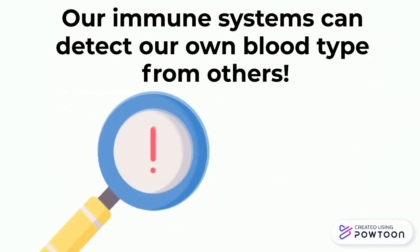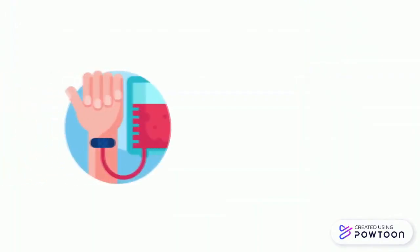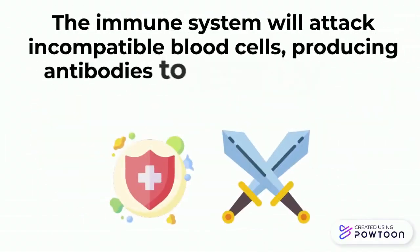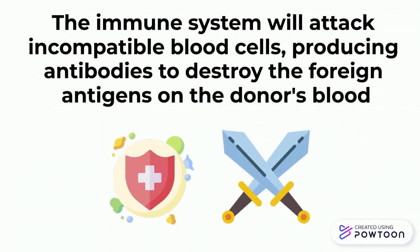Similar to detecting viruses and bacteria, our immune systems can tell apart our own blood cells from one another. If the blood a patient receives is not compatible with their own blood type antigen, then serious consequences can occur, including death. The immune system will attack the incompatible blood cells, producing antibodies to destroy the foreign antigens on the donor's blood, causing them to swell and eventually burst.